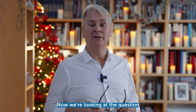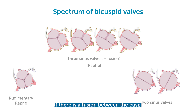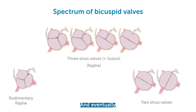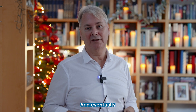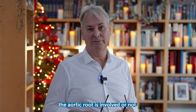We're looking at the question whether or not the patients have one, two, or three cusps, if there is a fusion between the cusps, if we have a raffae, which type of fusion it is, also how many sinuses we have, and eventually also if the aortic root is involved or not.